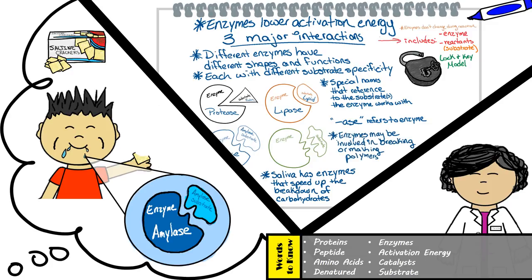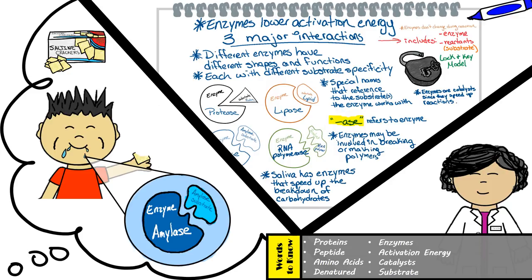Keep in mind that enzymes are not always involved in the breakdown of polymers — sometimes they're involved in making polymers. For instance, RNA polymerase is an enzyme that speeds up the reaction of RNA polymers being made. Just know that enzymes help reactions by acting as catalysts in either making or breaking polymers, and they can be identified by their suffix -ase.